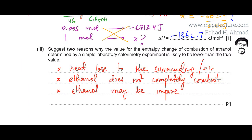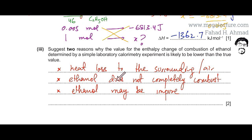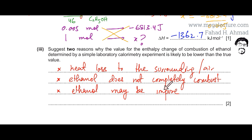A second reason is that ethanol might not completely combust: because ethanol has a low boiling point, some may evaporate and mix with air rather than burning. Alternatively, the ethanol may be impure, and the impurities might not combust, so the heat energy produced would be less than expected.